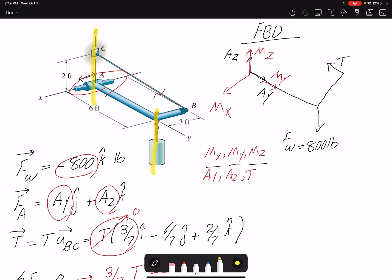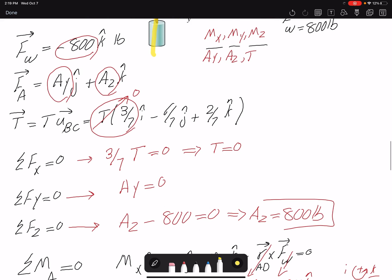So therefore, it's not going to create a moment about Z. And also, it's crossing Y axis. So it's not going to create a moment about Y either. It's only going to create a moment about X. But we found that using the equations as well.